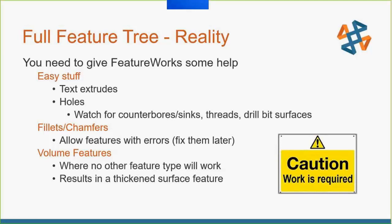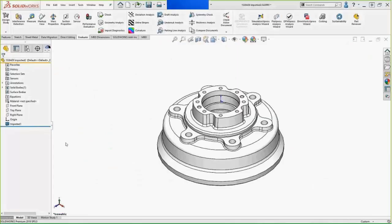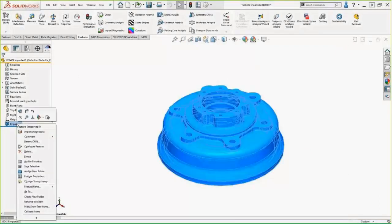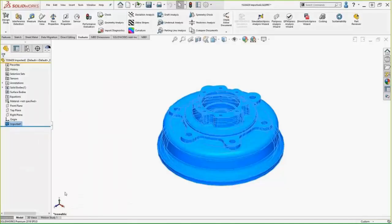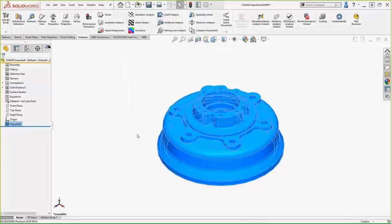Next are volume features — this is kind of when no other feature type will work. SOLIDWORKS says 'I can't get there,' so it creates a surface and thickens that surface into a solid. That's a way to keep rolling without actually building a feature you can manipulate with dimensions. Finally, we're going to look for patterns. These are the things we're going to help FeatureWorks do, so here's our next example.